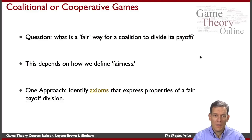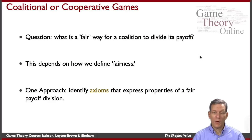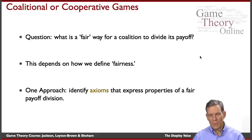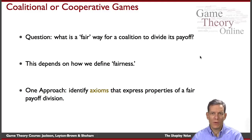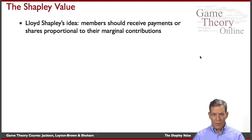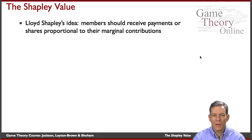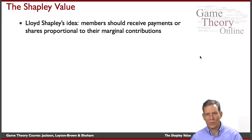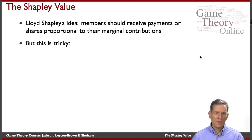How fairness is defined obviously depends on the way we define it, and the literature has basically taken axioms as the primary way of expressing the desired properties of rules for dividing up things. So what we're going to do is have some set of axioms or properties that we want to satisfy and then see what that gives us. The Shapley value is based on Lloyd Shapley's idea that members should basically be receiving things proportional to their marginal contributions — what does a person add when we add them to a group.